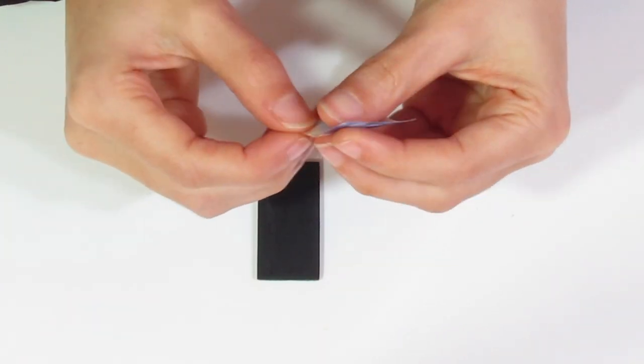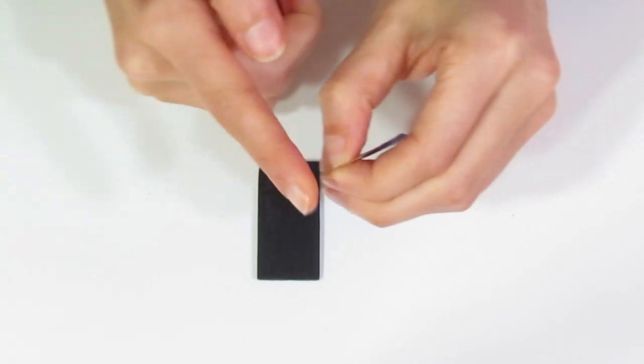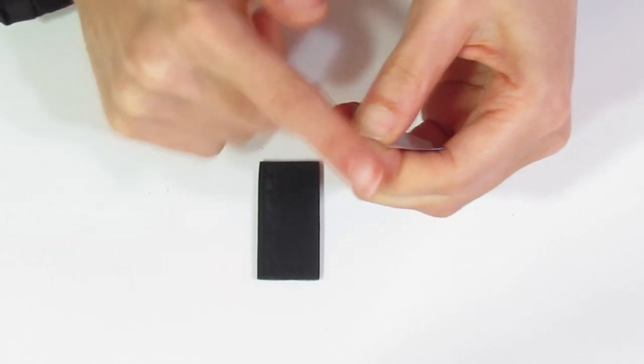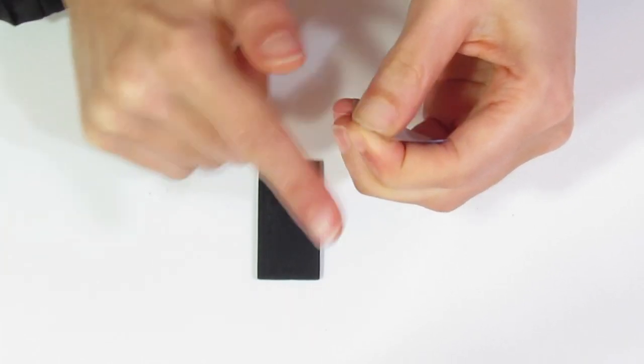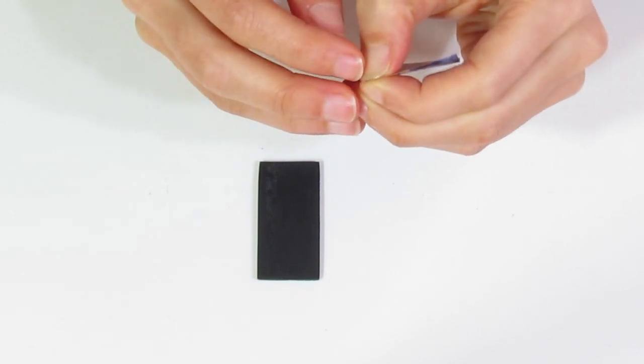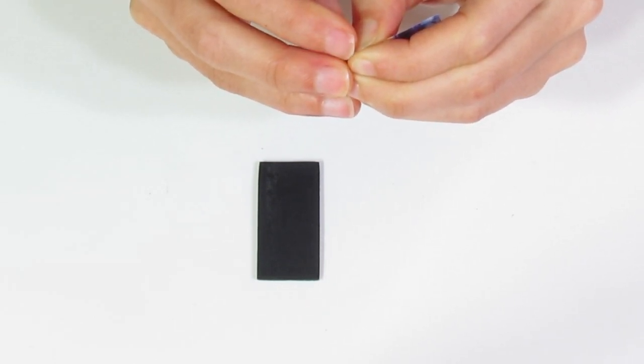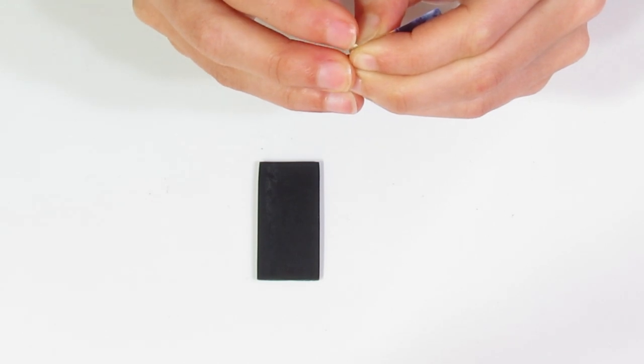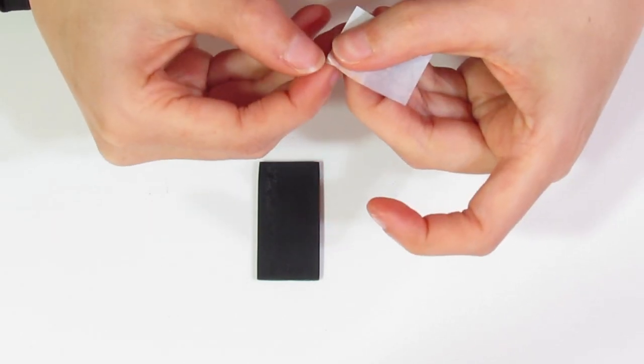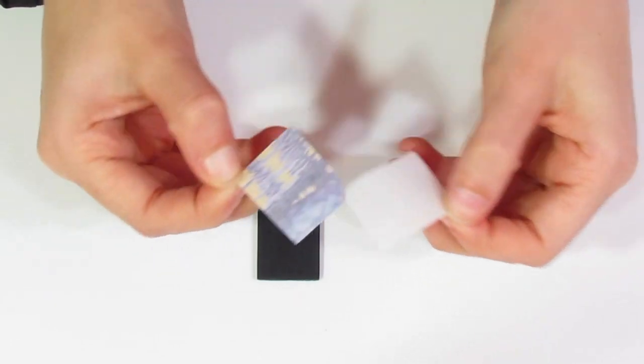Then just grab one end and rub it between your fingers, because you want to worry away at that corner so that we can pick off the backing. This is a little finicky. You can even dip this into water if you want to get it to release easier. But you should be able to get that corner separated like so.